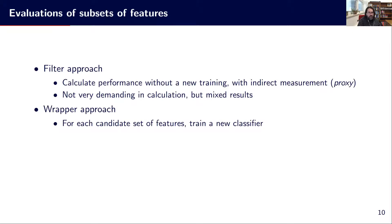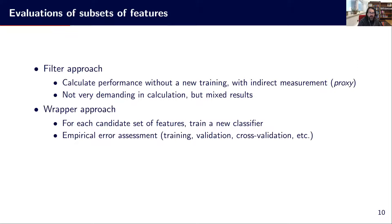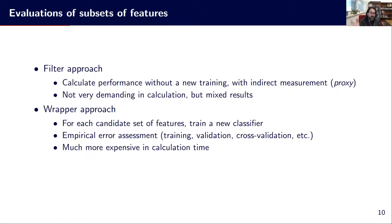There is also the wrapper approach. This one is not using a proxy or indirect measurement — it is really using directly a retrained model. For each candidate set of features, we train a new classifier and evaluate its performance in terms of generalization, using things like validation error or cross-validation error to assess the quality of the feature subset. It is much more expensive in calculation time compared to the filter approach, but at the same time it is much more reliable.